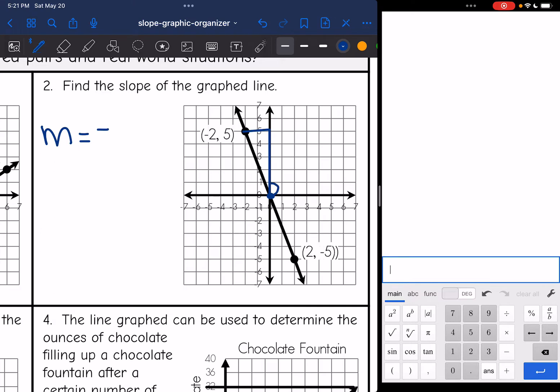And then I'm going to draw my slope triangle between those two perfect points. I'm going to count the rise. It is one, two, three, four, five. And the run is two. So my slope is negative five halves.